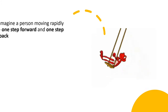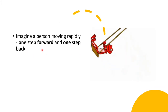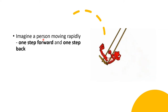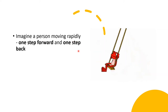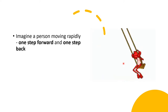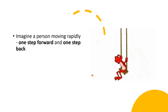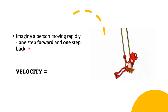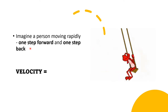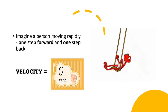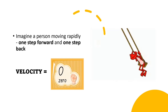Imagine a person moving rapidly — one step forward and one step backward, going back to the initial position. If the object moves forward then backward, the velocity is zero because the displacement is zero. Displacement tells us how far the object is from its initial to its final position — in this case, zero. So the velocity is zero.